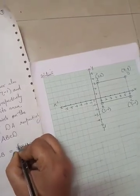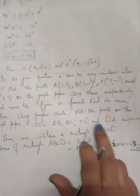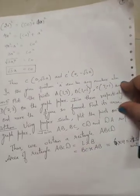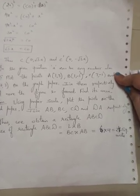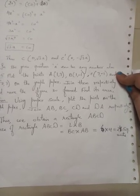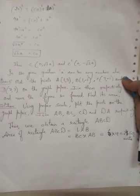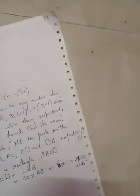The area of the rectangle is length × breadth = 6 × 4 = 24 square units. Join AB, BC, CD, and DA respectively — we obtain rectangle ABCD. The area of the rectangle is length × breadth = 6 × 4 = 24 square units.